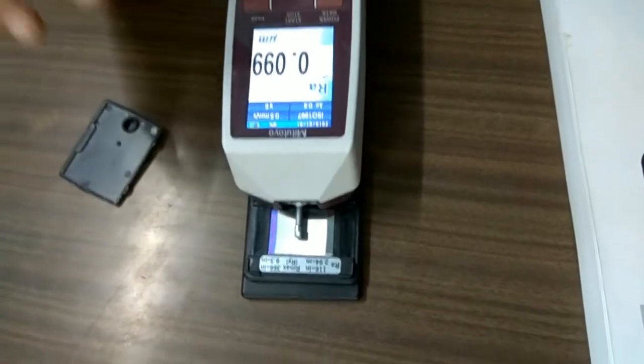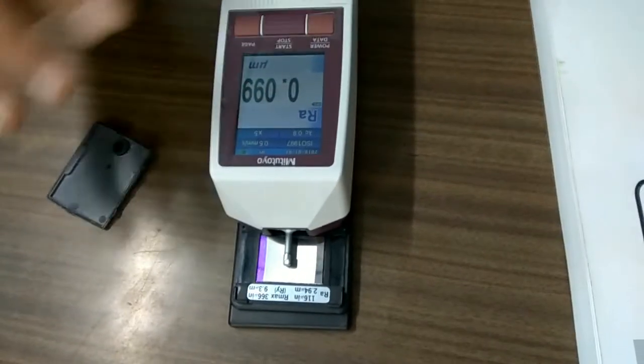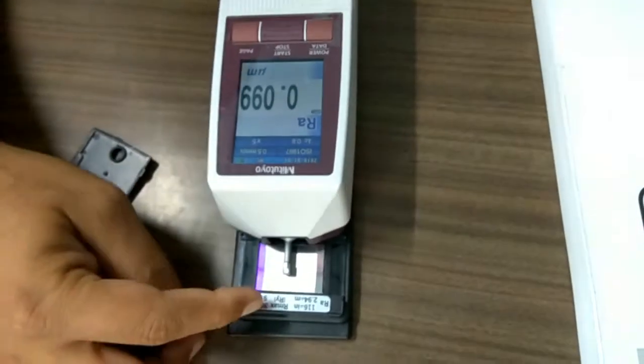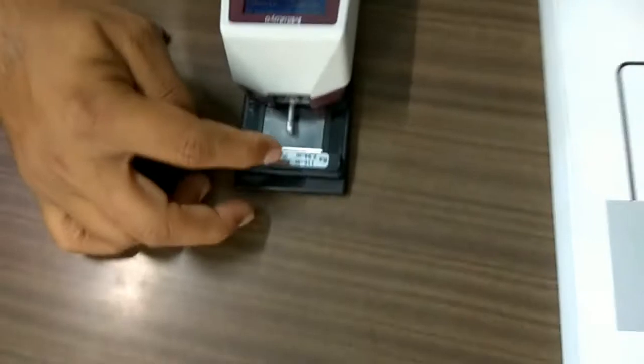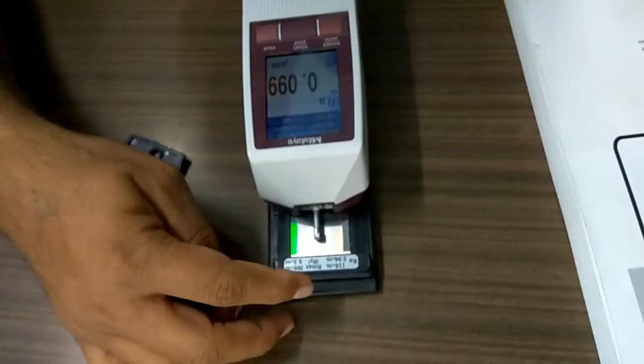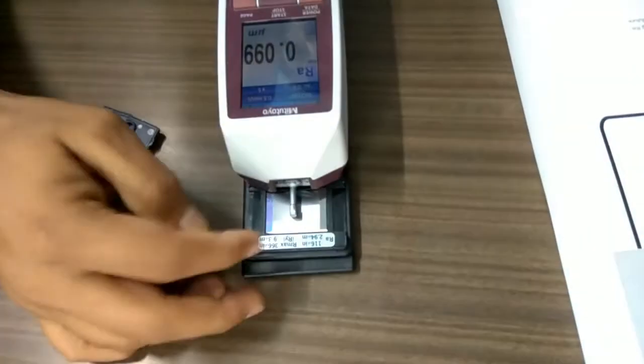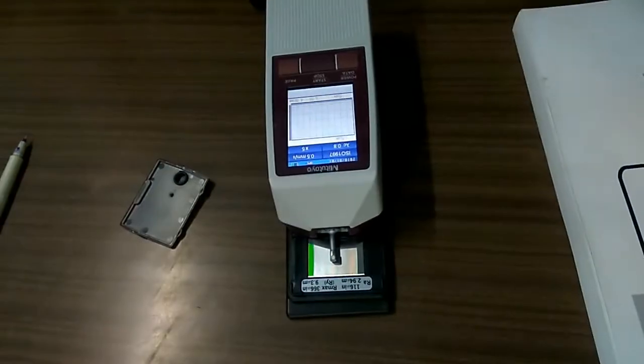Now further we'll again take one trial for the surface. This is the surface having standard roughness value given: 2.94 microns and 9.3 minimum and maximum. Here it is in inches. Now here just again start it. Start the motion.